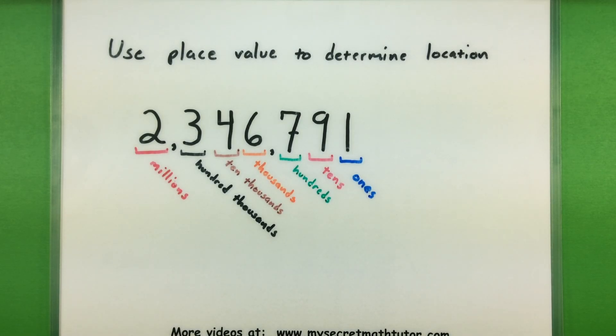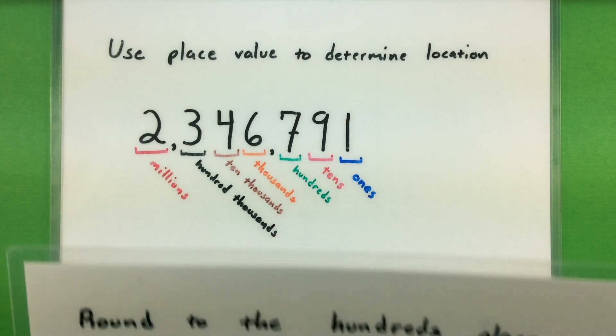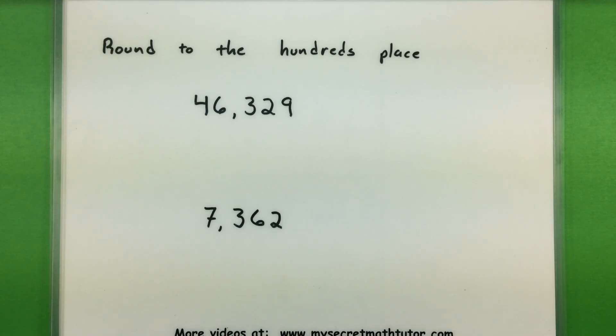Now that all that information is out of the way, let's get into some examples. For this first example, we want to take a couple of numbers and round them to the hundreds place.